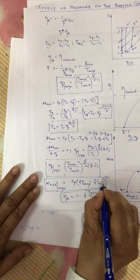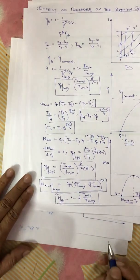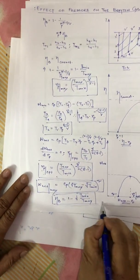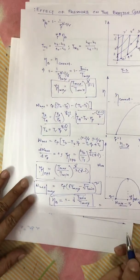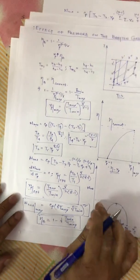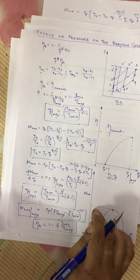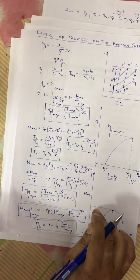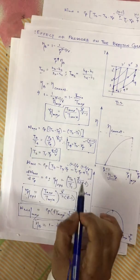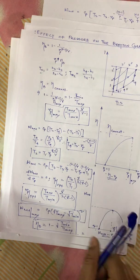So these are the key relations. Thank you. I hope this helps you understand the effect of pressure ratio on the Brayton cycle.